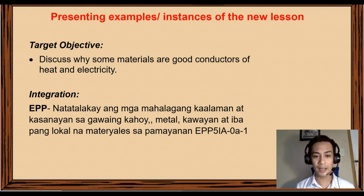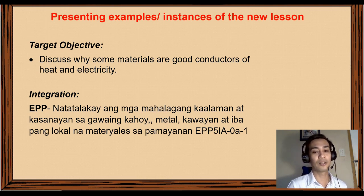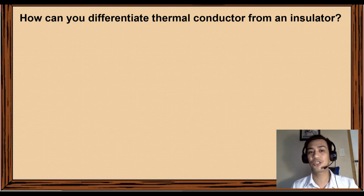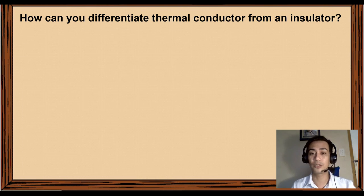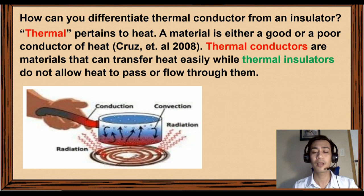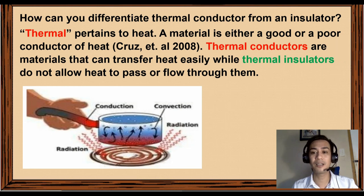This can be integrated to EPP, which discusses important knowledge and skills in working with wood, metal, bamboo, and other local community materials. Thermal pertains to heat — a material is either a good or poor conductor of heat. Thermal conductors are materials that can transfer heat easily, while thermal insulators do not allow heat to pass or flow through them.